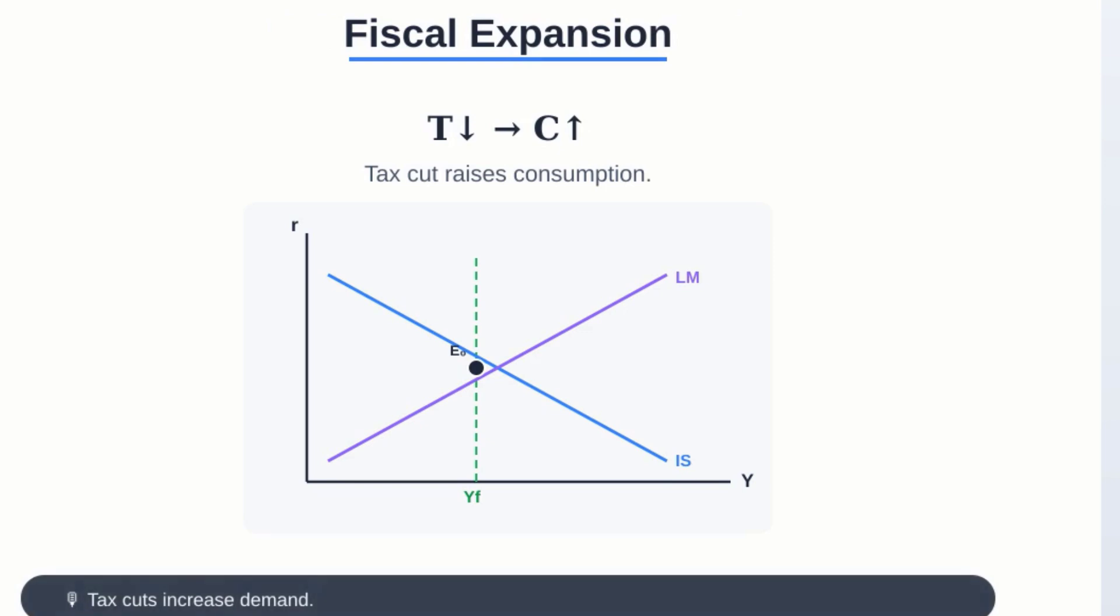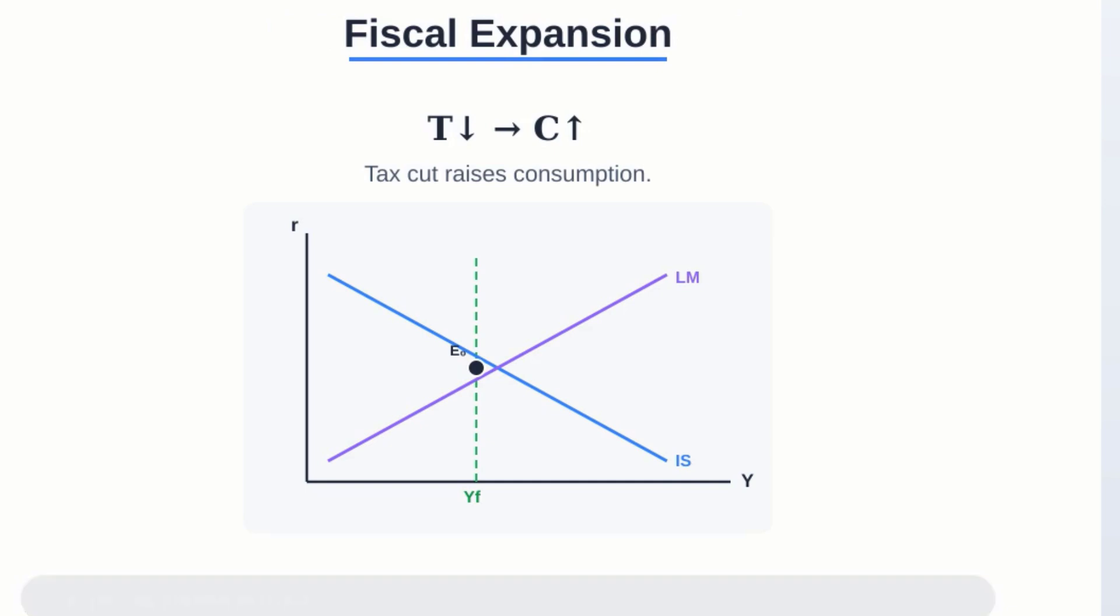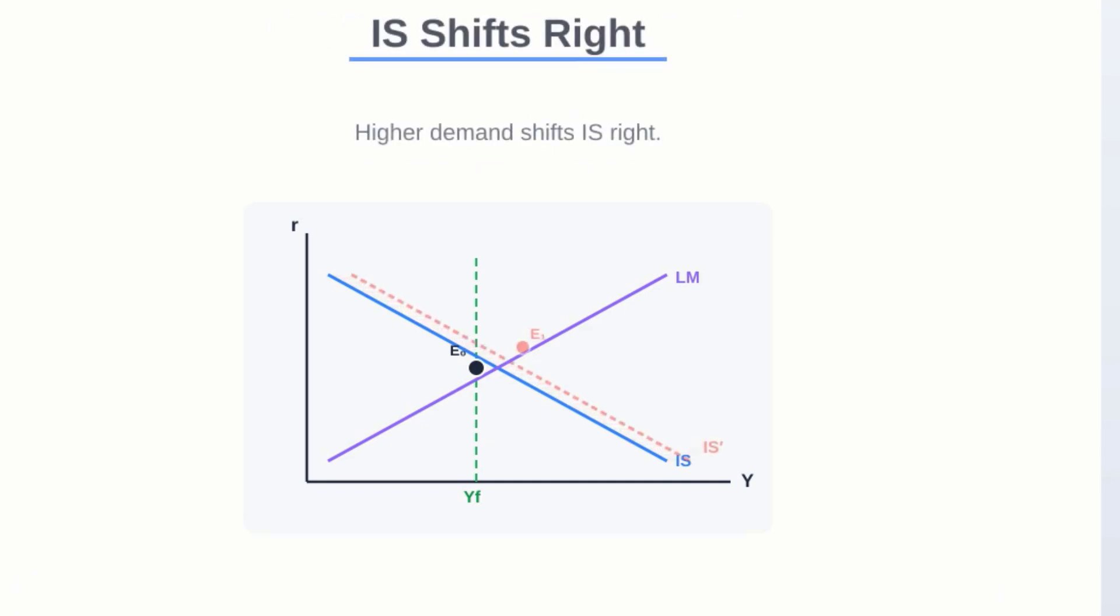Second, the market adjusts with inflation. See, with all that excess demand, prices start to rise. This reduces the real money supply and forces the LM curve to shift left.